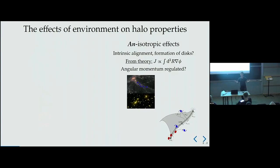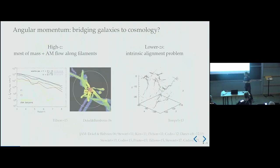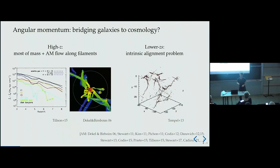I'm mostly going to focus on angular momentum, because it's the easiest property you can only create through anisotropic processes. What I want to argue today is that the formation of disks and intrinsic alignments are probably angular momentum regulated. Angular momentum is also a very promising tool to relate cosmology to galaxy formation.